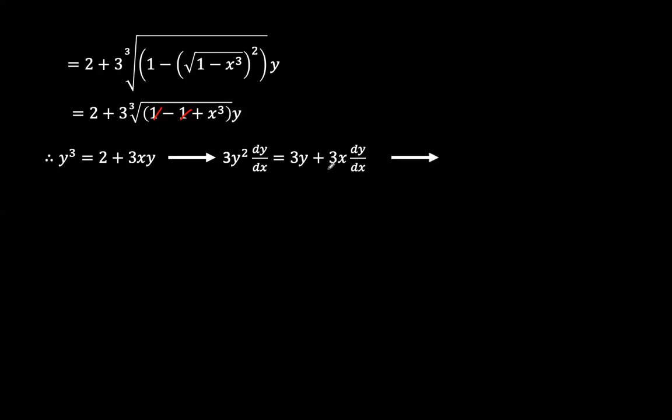And that means that when we now take this component to the opposite side, and then you divide both sides by 3y squared minus 3x, we get that dy dx is 3y over 3y squared minus 3x. And then now what that means is that 3y squared minus 3x over 3y dy is the same as dx.